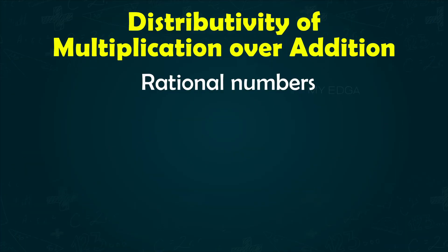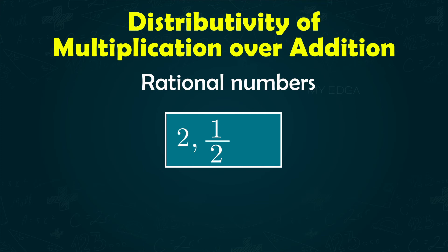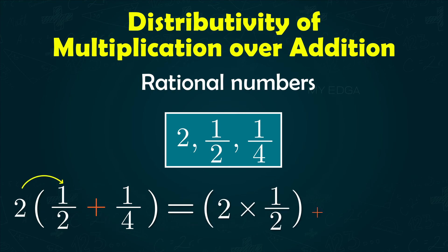This means that for rational numbers 2, 1/2, and 1/4, the sum of 1/2 and 1/4 multiplied with 2 is the same as adding the product of 2 and 1/2 and 2 and 1/4.